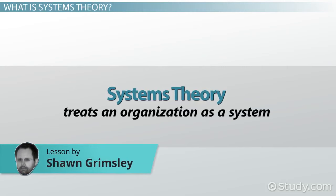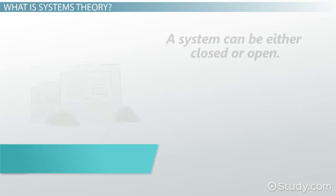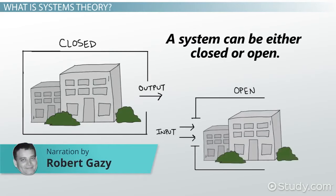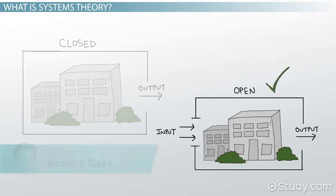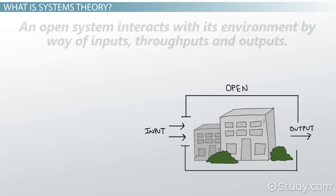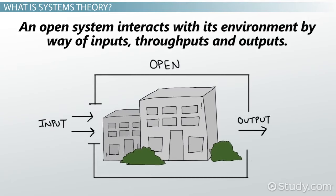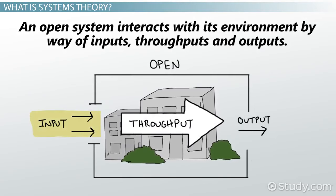Systems Theory treats an organization as a system. A system can be either closed or open, but most approaches treat an organization as an open system. An open system interacts with its environment by way of inputs, throughputs, and outputs.